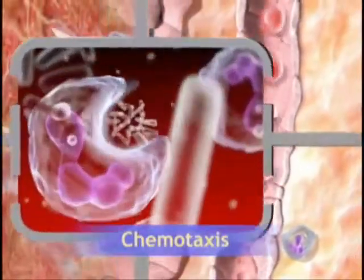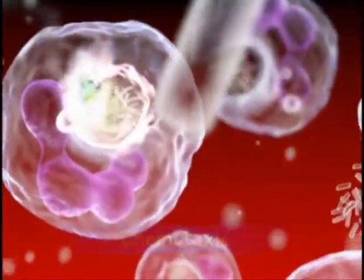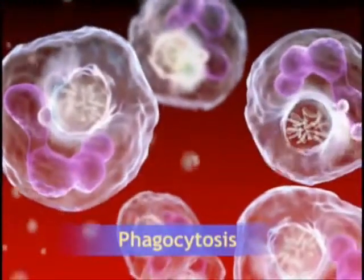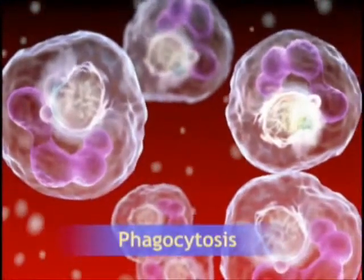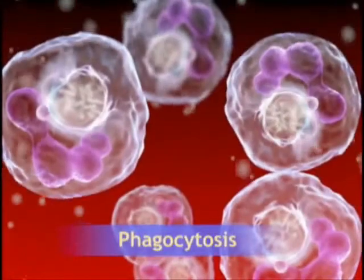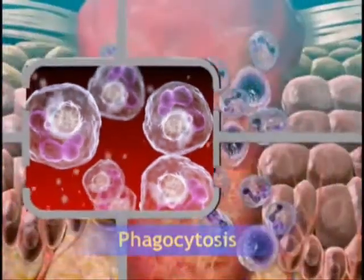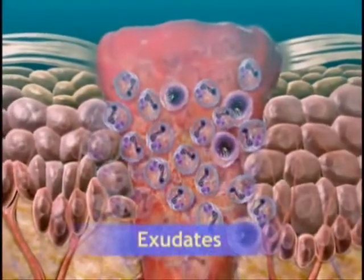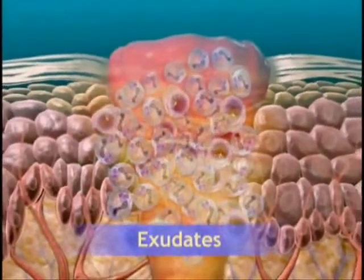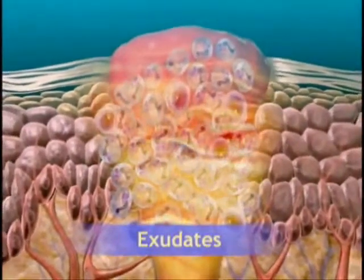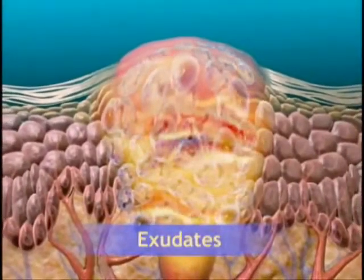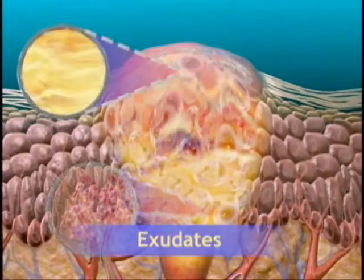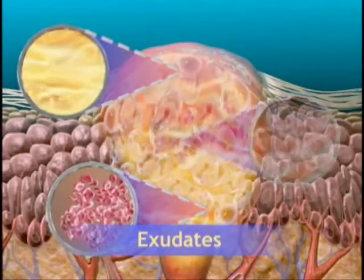The cellular stage culminates in the leukocytes engulfing and degrading bacteria and cellular debris in a process called phagocytosis. Products of phagocytosis along with plasma and blood cells form exudates, which accumulate causing swelling and pain. Exudates are composed of serous fluid, red blood cells, fibrinogen or tissue debris, and white blood cell breakdown products.